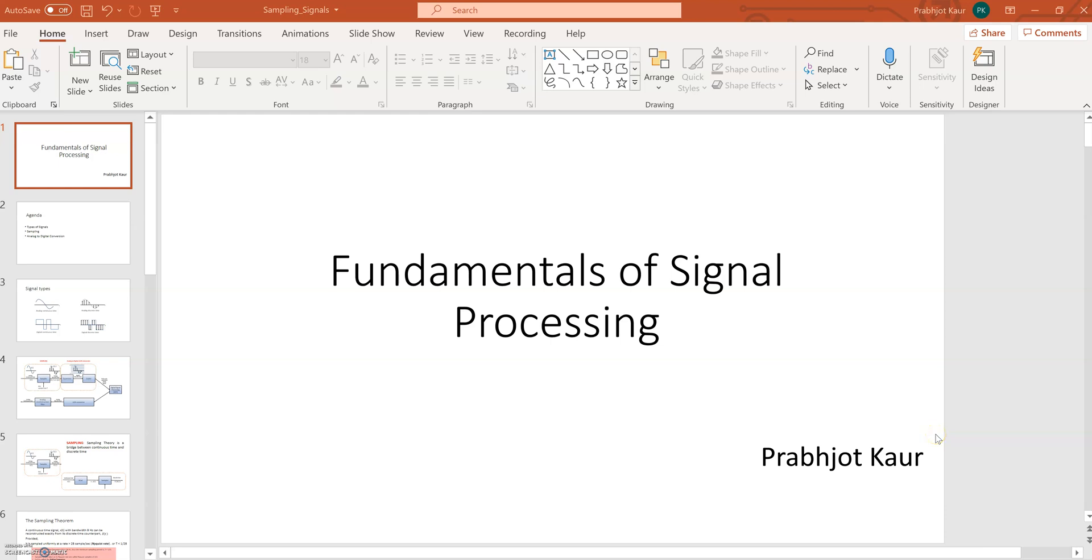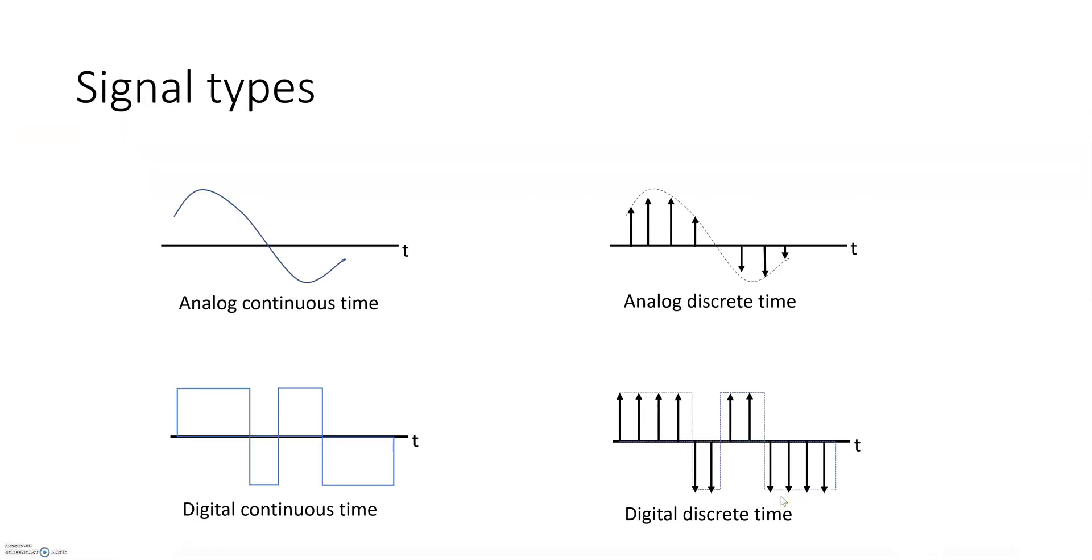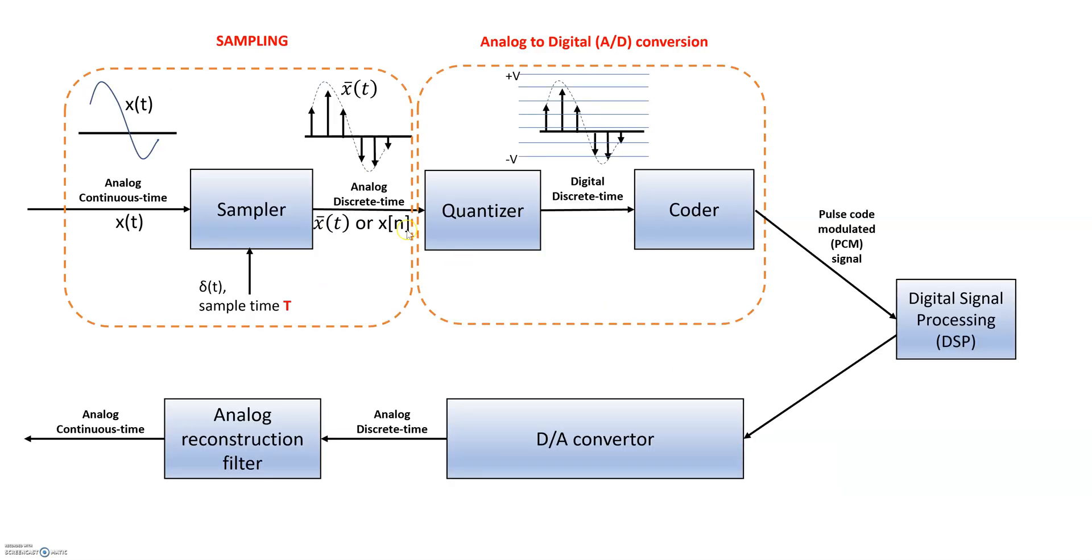Hello, welcome again. This is a series that is basically discussing the fundamentals of signal processing. In the last slide, what I covered was the basics of signals like the signal definitions. And then also, we spent a lot of time discussing how to do the sampling, which basically is converting the signal from analog continuous time to analog discrete time.